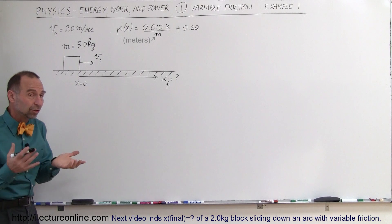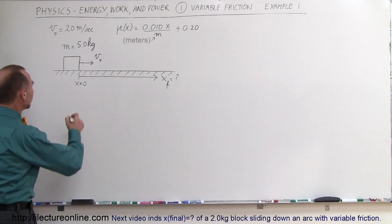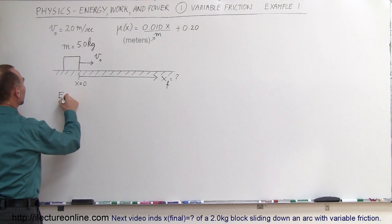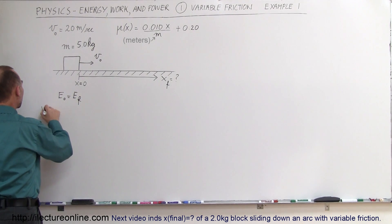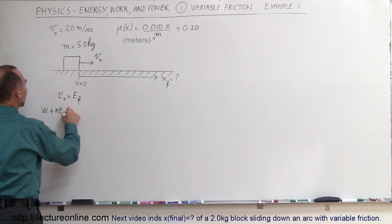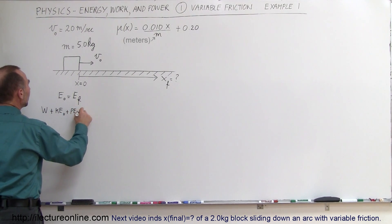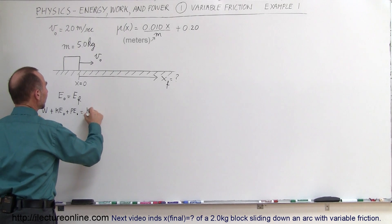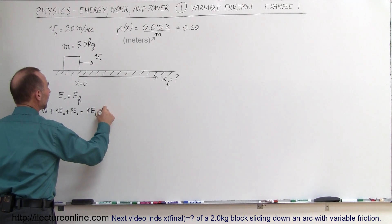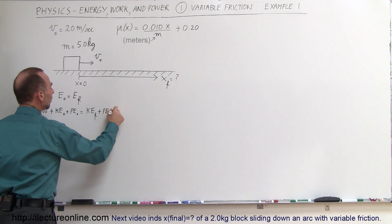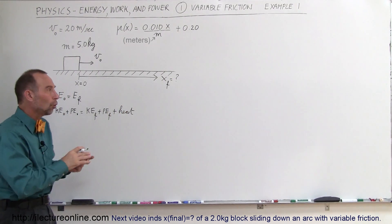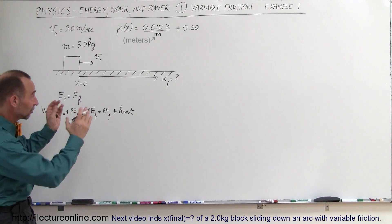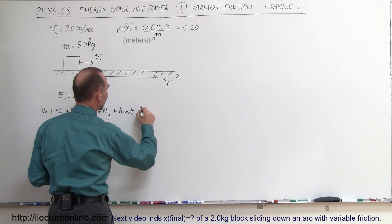Our initial approach is the same as any other approach. We say that the energy initial equals energy final. The initial energy could be any work put into the system plus initial kinetic energy plus initial potential energy, and that must equal the final kinetic energy plus the final potential energy plus any heat lost. Typically the heat loss is the portion of energy lost due to overcoming friction.